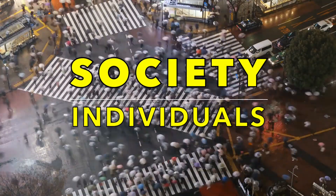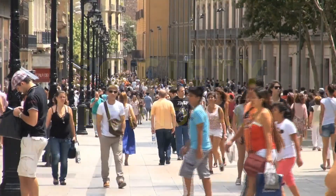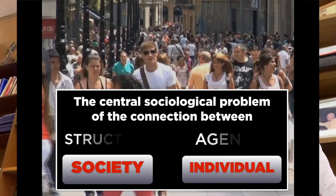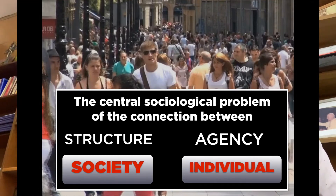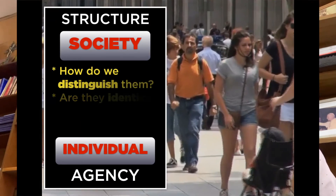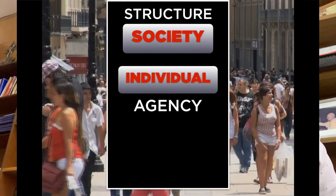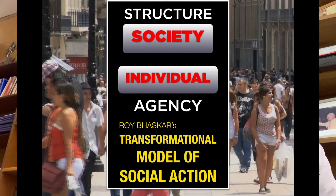Let's talk about one important example of emergence: the relationship between society and its individual members. The problem with social reality is that it is inseparable from its human components. So the central sociological problem has always been this connection between structure and agency. How do we distinguish society from the individuals and groups of individuals that comprise it? Are they identical? How are they related? Roy Bhaskar's Transformational Model of Social Action clarifies the relationship between society and people, between structure and agency.